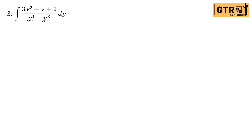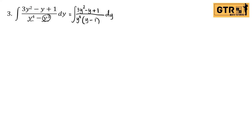First, we need to factor the denominator. We have y to the fourth minus y cubed. Try the common monomial — factor out y cubed. So the integral becomes 3y² minus y plus 1, all over y cubed times (y minus 1). We have y cubed, exponent of 3, so that is case 2. And the factor (y minus 1) is case 1.